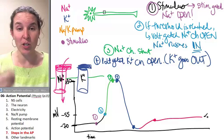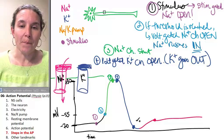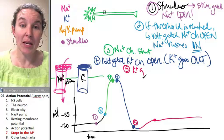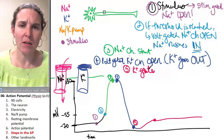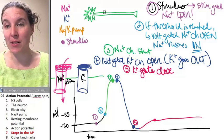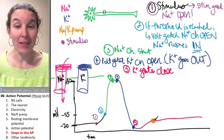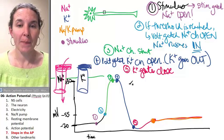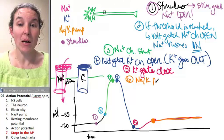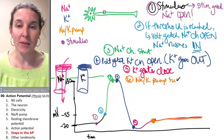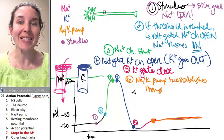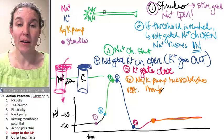What helps reestablish that? Potassium gates close. And then who goes to work? Sodium potassium pump. Reestablishes resting membrane potential.